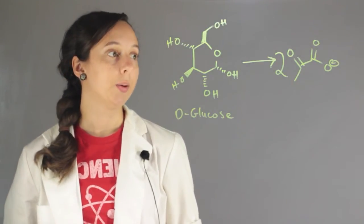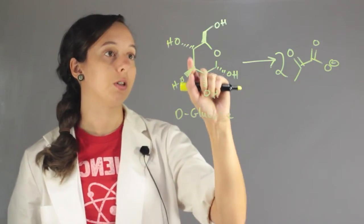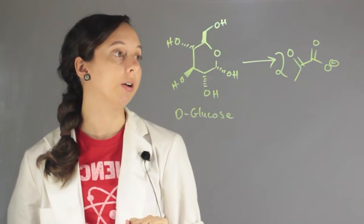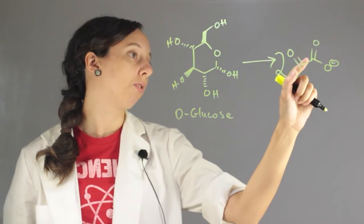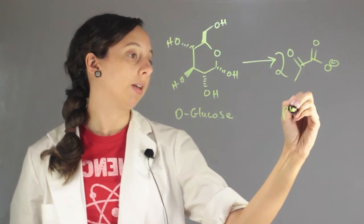we have one, two, three, four, five, six carbons in glucose and we have one, two, three carbons in pyruvate and that makes sense.